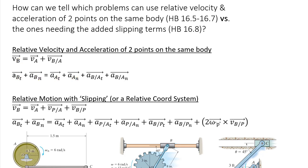Another thing to notice is that in all these equations — I'll look at the one at the bottom because it's the most complex, at least without the tangent-normal split of the acceleration terms — if we multiply these subscripts, essentially B equals A times P-over-A times B-over-P. As we cancel things out, A cancels with A, P cancels with P, and we're left with B equals B. That has to be true. That's a really strong tool to make sure you're writing an equation that's valid and actually going to be solvable.